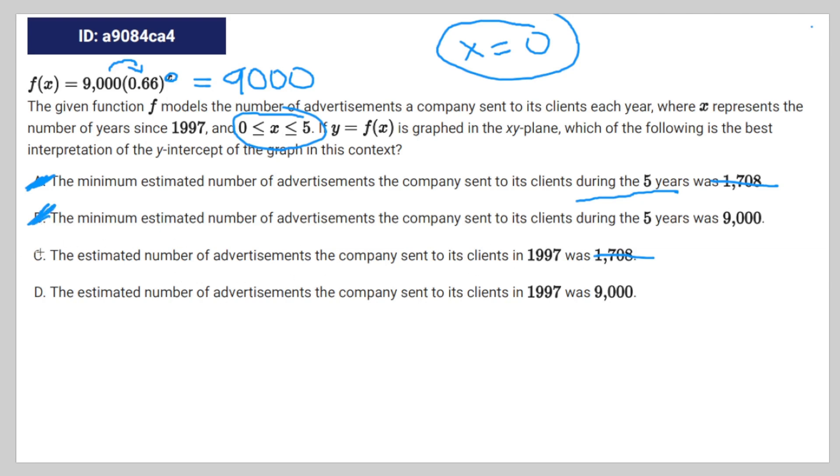Which means you're really just left with D, which is the estimated number of advertisements the company sent to its clients in 1997. I mean, if zero years have passed after 1997, that means it's still 1997. So that's the correct answer.